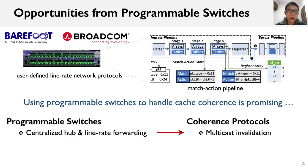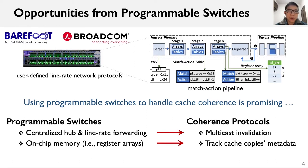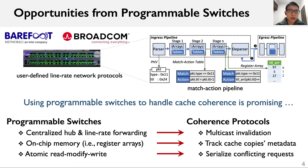First, a programmable switch is a centralized hub for inter-server communication and can handle several billions of packets per second, so we can leverage the switch to multicast the invalidation messages of cache coherence. Second, programmable switches have on-chip memory that can store metadata of cache copies. Third, the on-chip memories support atomic read-modify operations, so we can design in-switch locks to serialize conflicting requests.